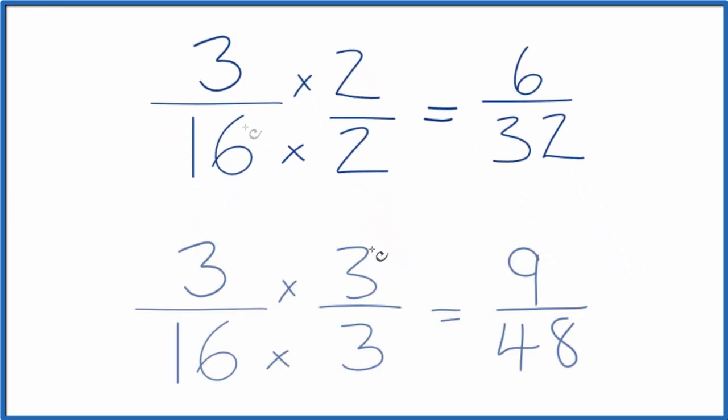Let's try another one. So here we multiply by 3 over 3. 3 divided by 3 is 1, and we end up with 9 forty-eighths. That's an equivalent fraction to 3 sixteenths.